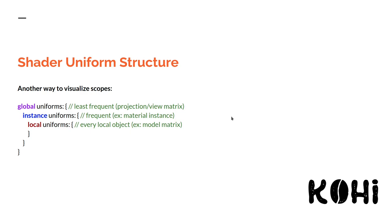Here's another way to visualize how the scopes work. At the outermost scope we have our global uniforms, which have the least frequent updates — our projection/view matrix. Then we have instance uniforms, which are updated more frequently — for example, our material instance data. Then we have local uniforms, updated for every local object, like a model matrix. The further we go into scope, the more often things are updated. Descriptors at the global level don't need to be updated very often, whereas instance-level ones need updating much more often, so splitting them up this way is an optimization.